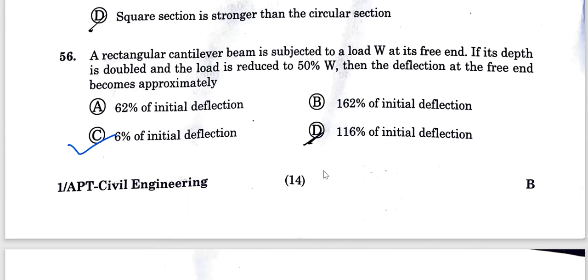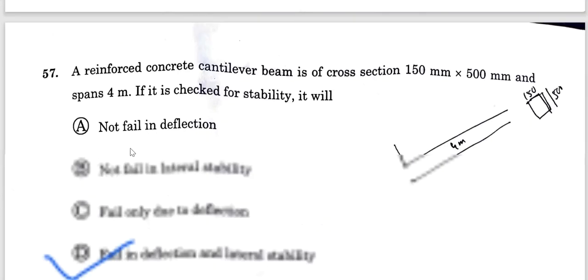Question 56: A rectangular cantilever beam is subjected to a load W at its free end. If its depth is doubled and load is half, then the deflection at free end becomes approximately one-sixteenth times the initial deflection, around 6% of the initial deflection. Option C is the correct answer.